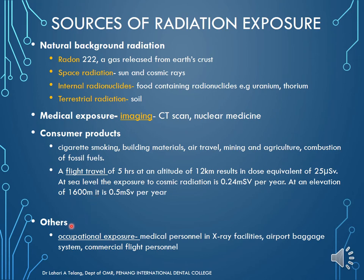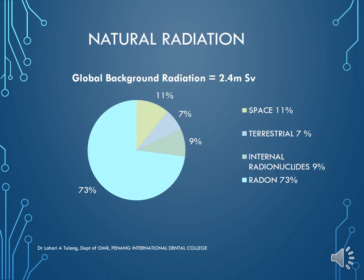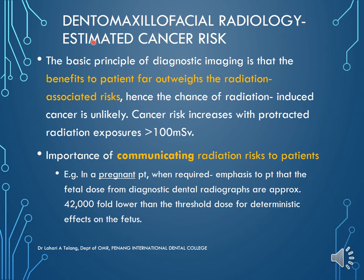Occupational exposure affects those working in x-ray facilities, airport baggage systems, or as commercial flight personnel. All of this combined should sum to an annual dose of about 3 mSv. The distribution of natural background radiation (2.4 mSv per year) includes space, terrestrial, internal radionuclides, and radon — with radon being the major contributor at about 73%.